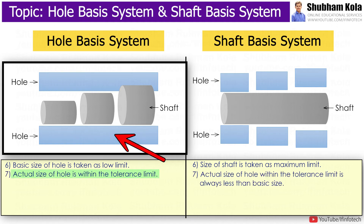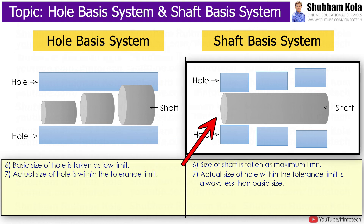The actual size of hole in hole basic system is within the tolerance limit, whereas in shaft basic system, the actual size of hole within the tolerance limit is always less than basic size.